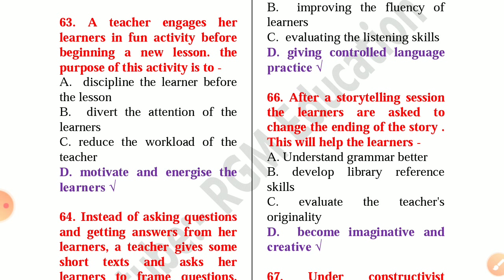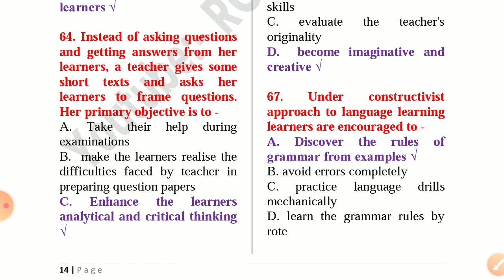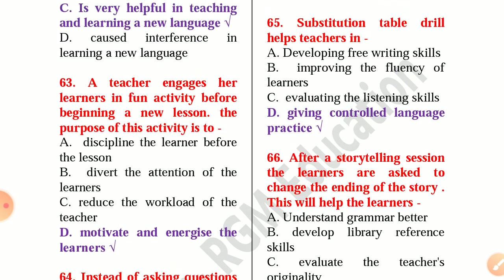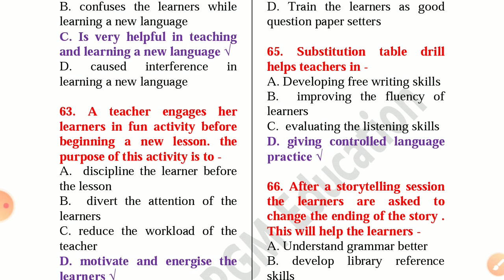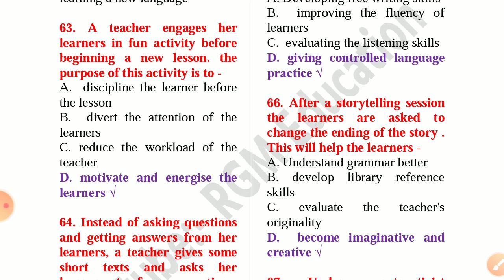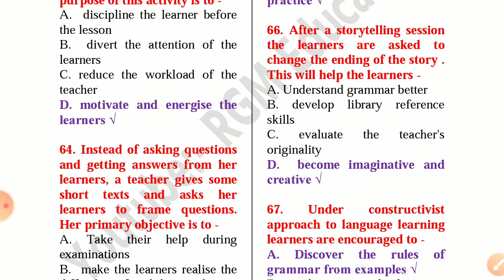If you want to get the PDF of this 800 plus questions and answers, you will get the link in the description below. Question 64: Instead of asking questions, a teacher gives short texts and asks learners to frame questions — her primary objective is to enhance the learners' analytical and critical thinking. Question 65: Substitution table drill helps teachers in giving controlled language practice. Question 66: After a storytelling session, learners are asked to change the ending of the story — this will help learners become imaginative and creative.